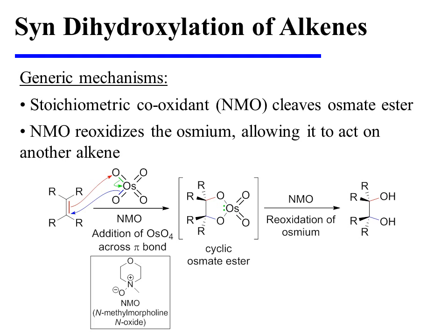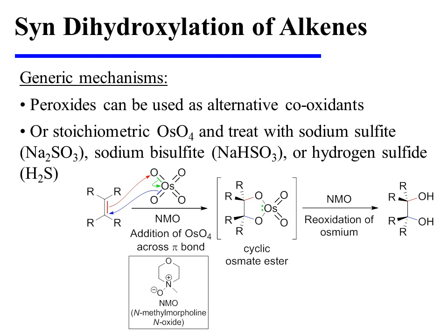The final product of the reaction is the vicinal diol, in which the two hydroxyl groups have been added to the same side of the alkene substrate. There are, however, other methods available for the cleavage of the cyclic osmate ester. Instead of using NMO, it is also possible to use peroxides as alternative co-oxidants. Or, stoichiometric osmium tetraoxide can be used, and the cyclic osmate ester can then be treated with sodium sulfite, sodium bisulfite, or hydrogen sulfide to cleave it. And that's helpful because osmium tetraoxide is expensive and toxic.